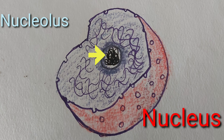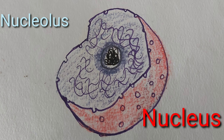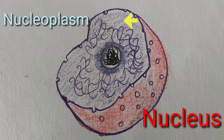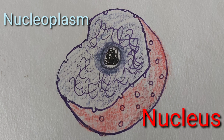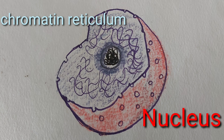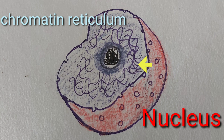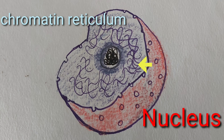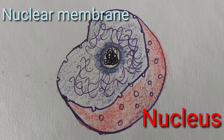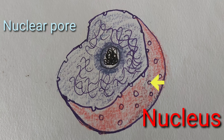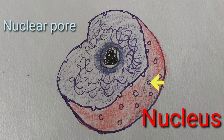The nucleolus plays a major role in the synthesis of ribosomes and is spherical in shape. The nucleoplasm is the fluid part of the nucleus. Chromatin reticulum is seen as a network in the nucleoplasm and carries genes. The nuclear membrane is a double-layer membrane that covers the nucleus.